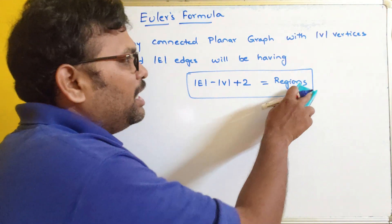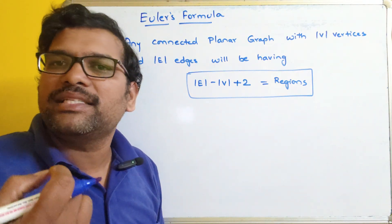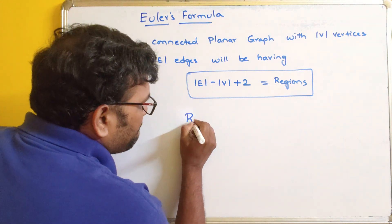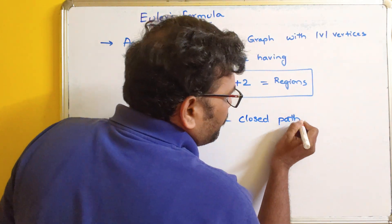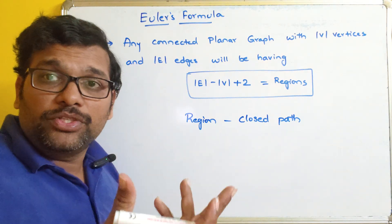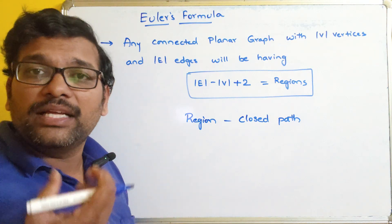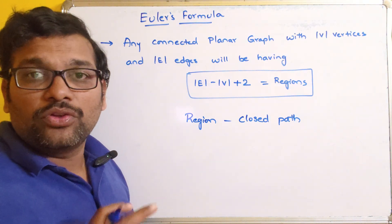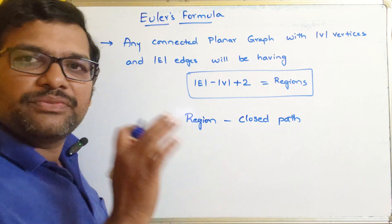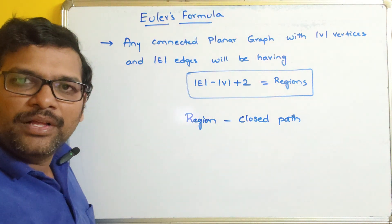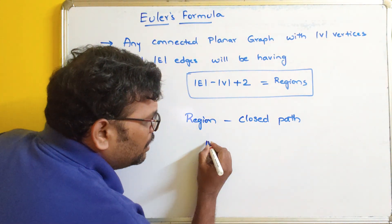Before going to the example, let us understand regions. A region is similar to a circuit or a cycle — that means a closed path. Region means a closed circuit or closed path, where the starting vertex and the ending vertex are the same. The closed surface we call a region.